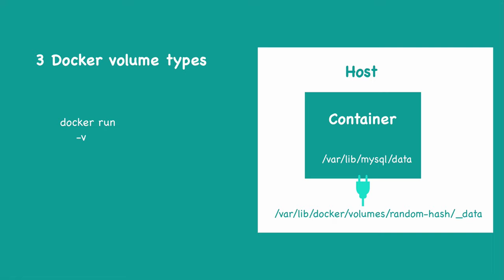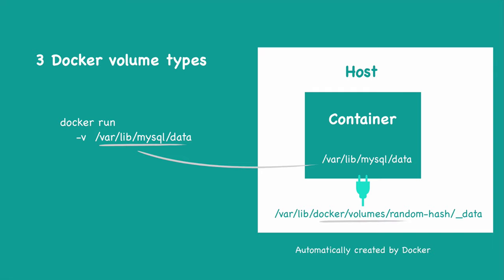The second type is where you create a volume by referencing only the container directory. You don't specify which directory on the host should be mounted — that's taken care of by Docker itself. That directory is automatically created by Docker under /var/lib/docker/volumes. For each container, a folder is generated and gets mounted automatically. These are called anonymous volumes because you don't have a named reference to this automatically generated folder.